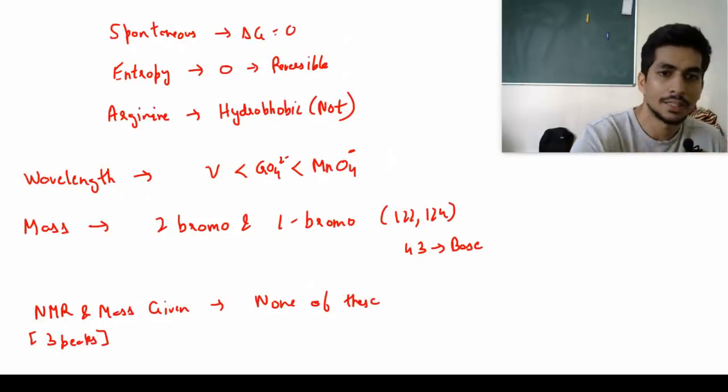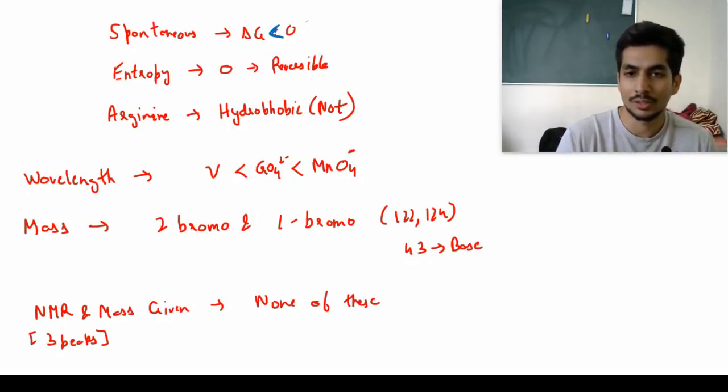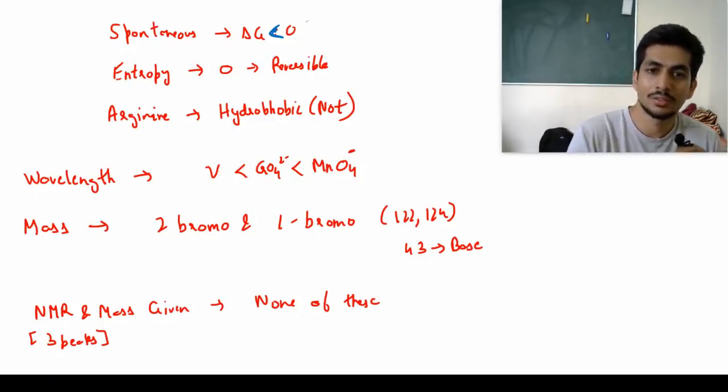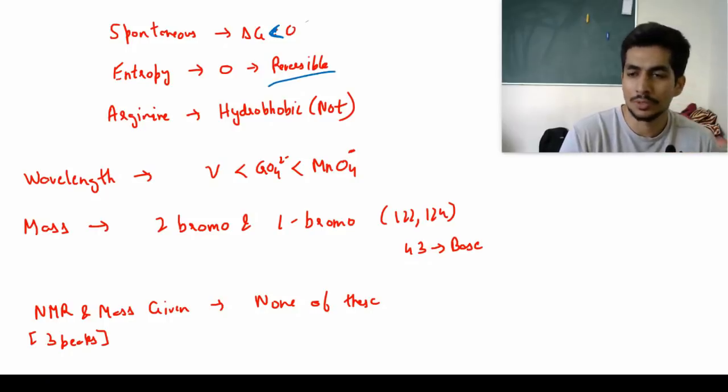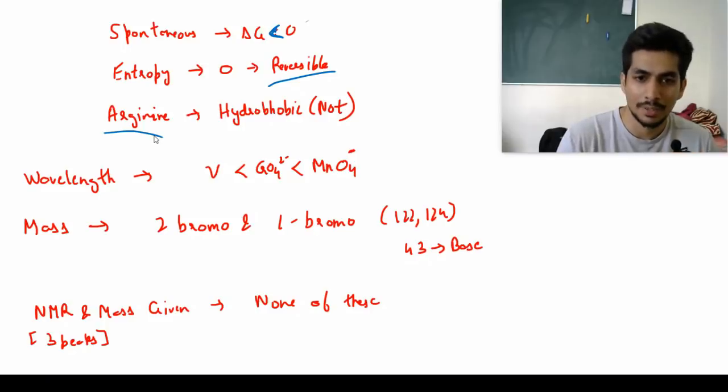For a spontaneous reaction, what do we require? Delta G should be less than zero. Entropy of the surroundings does not change for which process? The answer was reversible process. Options were endothermic, exothermic, irreversible, and reversible. Which of the following amino acids is not hydrophobic? The answer was arginine because it's basic in nature.